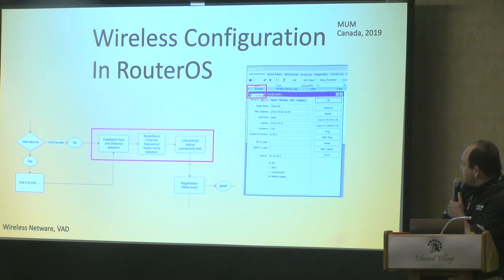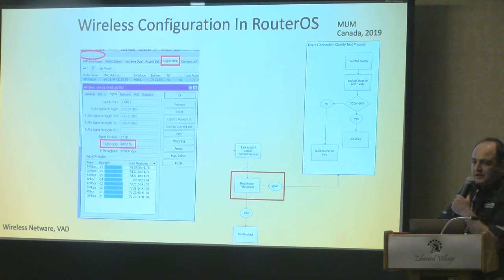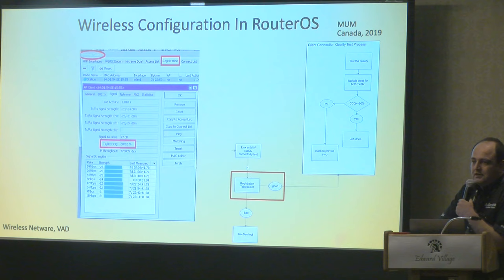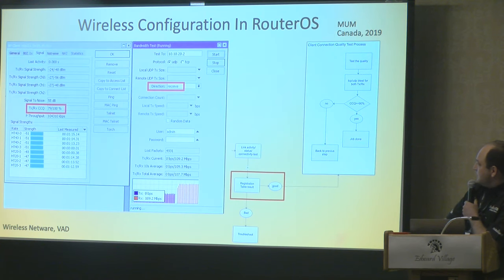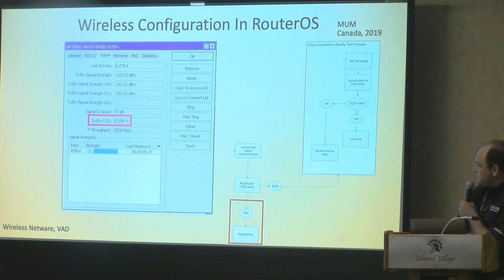This location shows if your link is registered — the flag 'R' means running. The next stage is the registration table. We need to focus on CCQ, which should be as close to 100% as possible to ensure no packet loss and no retransmission. The best way to test CCQ is by running a bandwidth test, found under Tools > Bandwidth Test. You can run it between two links — if the configuration is good, CCQ will rise to 100%; if not, it drops and shows how much you're losing.